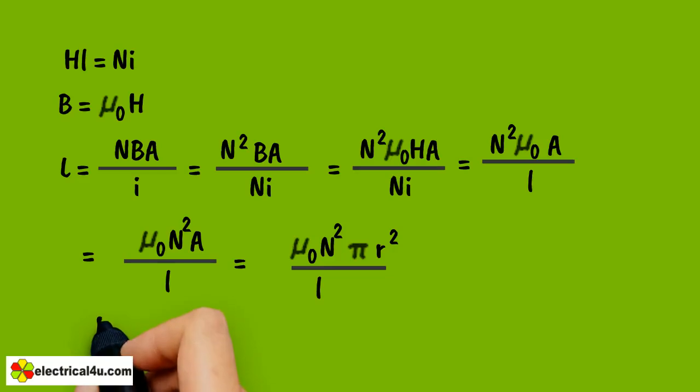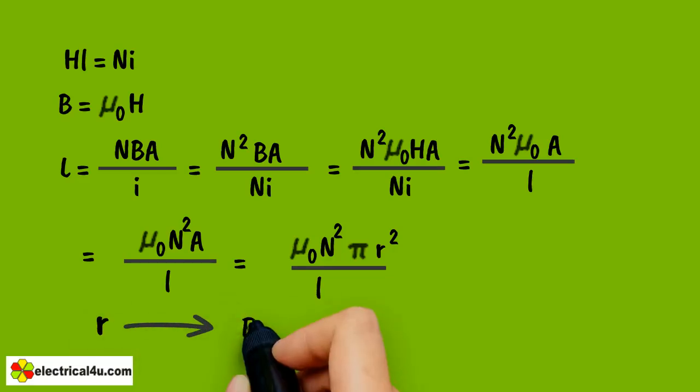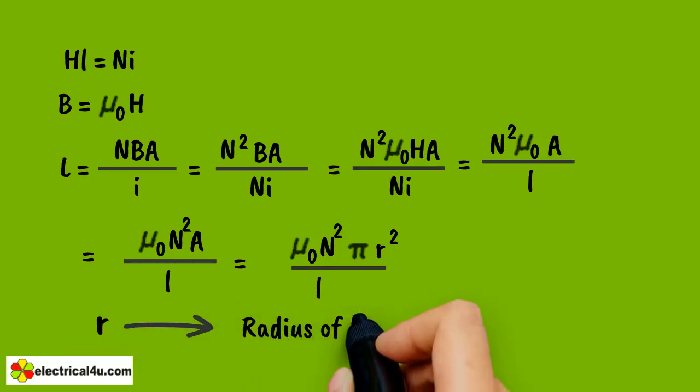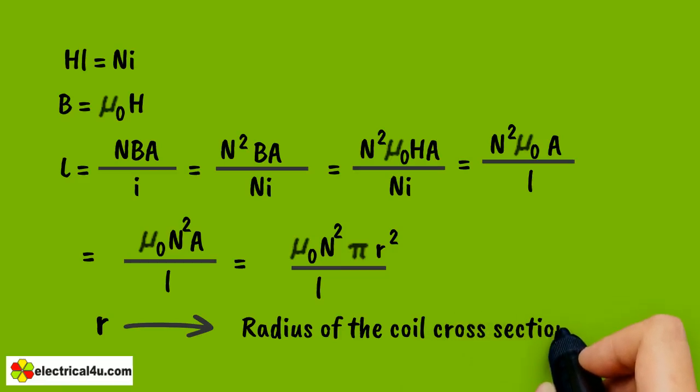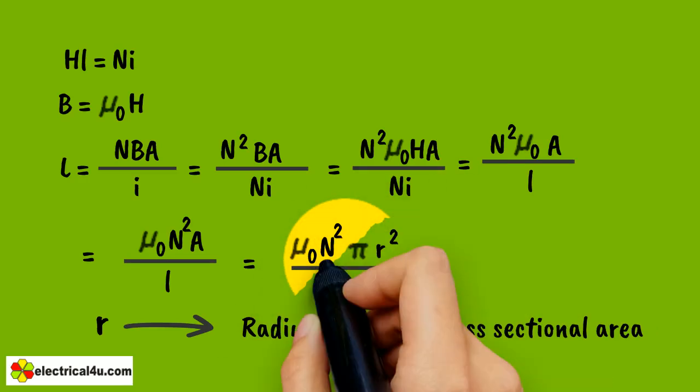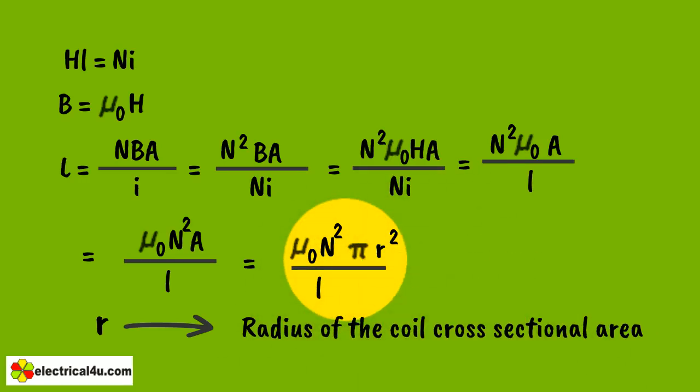R is the radius of the coil cross sectional area. L is a geometric quantity. It depends only on the dimensions of the solenoid and the number of turns in the solenoid.